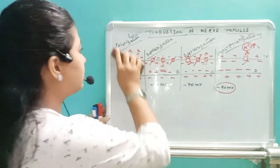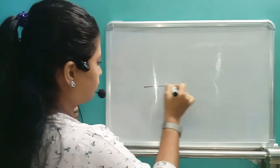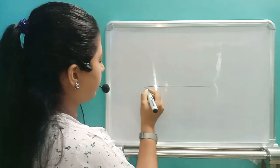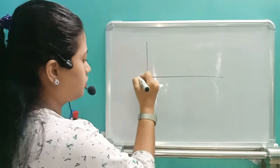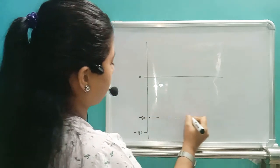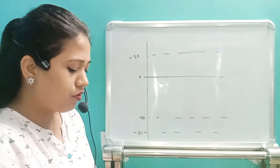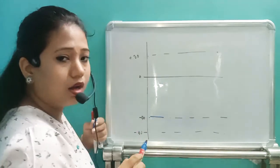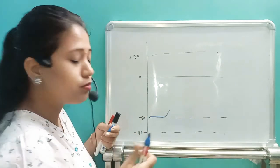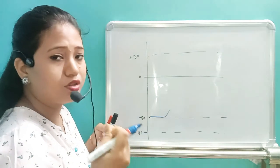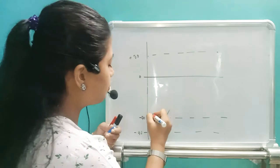Now let's see the graph. On the y-axis we have millivolt values: minus 90, minus 70, 0, and plus 30. Whenever we are in the resting membrane potential, we are at minus 70 millivolt. Whenever we get a sufficient threshold stimulus — around minus 65 millivolt — the stimulus is enough to create a spike potential, meaning it can reach the state of plus 30 millivolt. That is called the threshold stimulus.